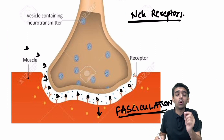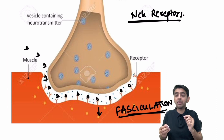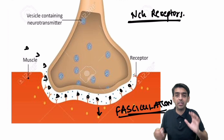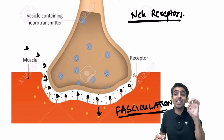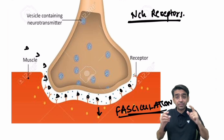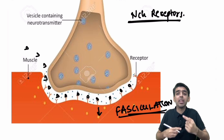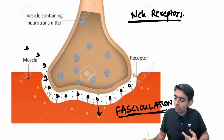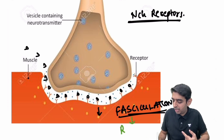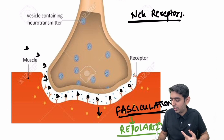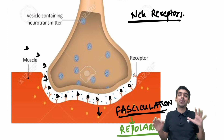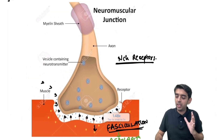So once succinylcholine binds to the nicotinic cholinergic receptors it brings about fasciculation, similar to acetylcholine but asynchronous. After this, when it goes into the repolarization phase, that is when the muscle is completely relaxed.